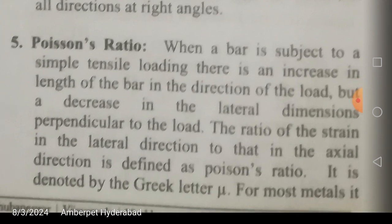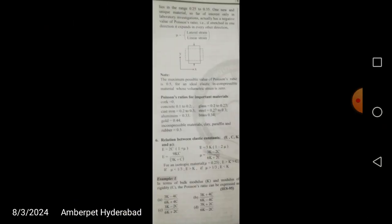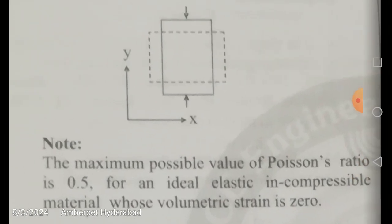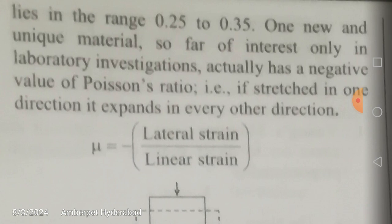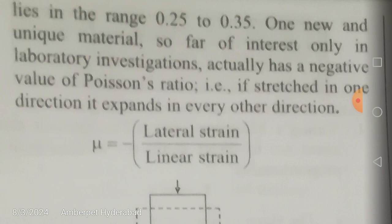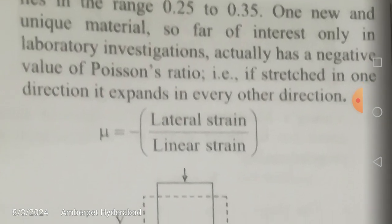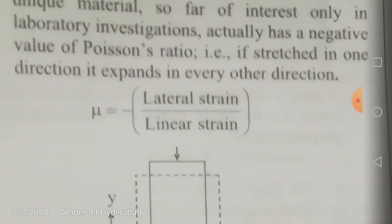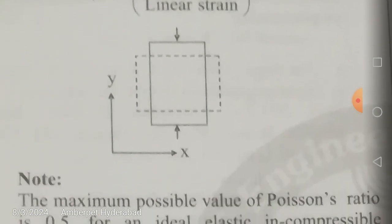Poisson's ratio for most materials varies between 0.25 and 0.35. One unique material of laboratory interest has a negative Poisson's ratio — if stretched in one direction, it expands in every other direction rather than contracting. This is called negative Poisson's ratio, and it equals minus lateral strain divided by linear strain. A diagram is provided illustrating this behavior.